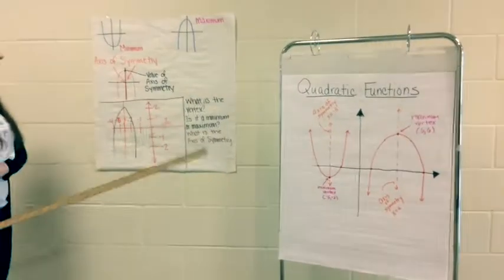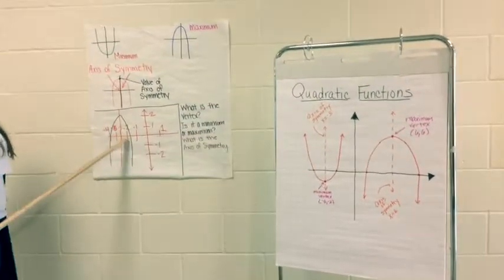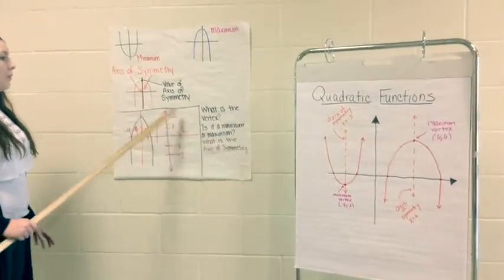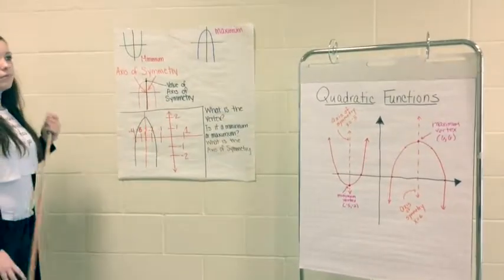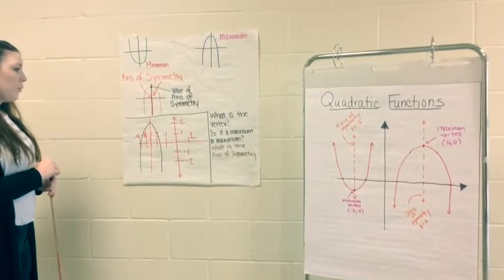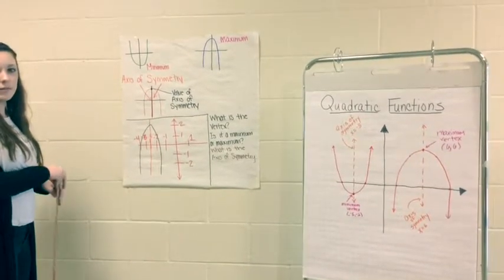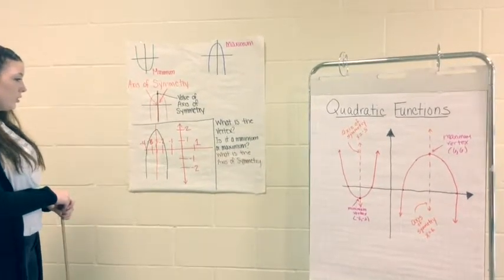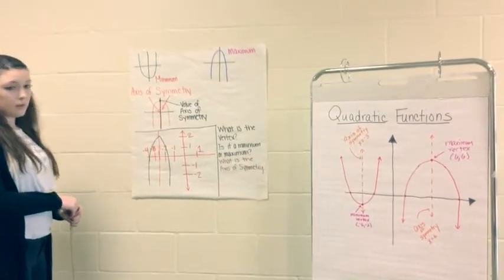Now, Donnie, try and tell me if this is the maximum or minimum vertex. Maximum. Maximum? Now, tell me what the vertex is. Negative 3. What is the axis of symmetry? Uh, 2. 2? Yeah. You sure? It's negative 3. Yes.